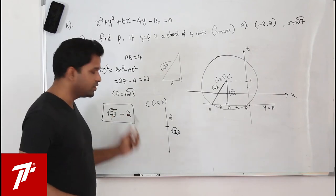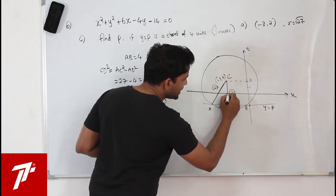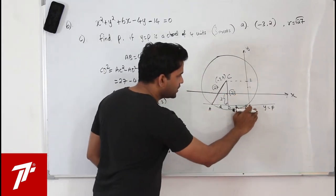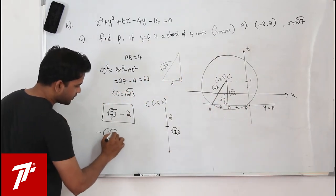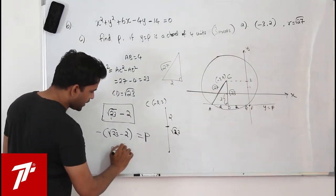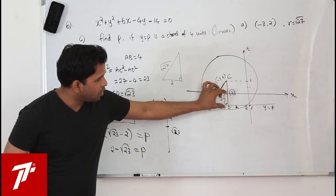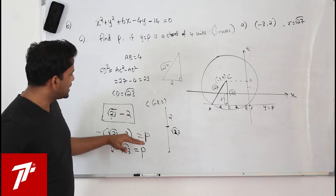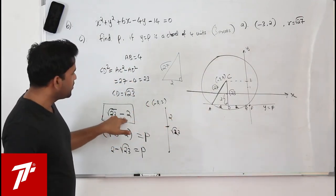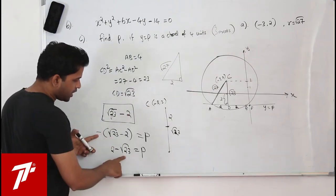Since p is a negative constant, we take the length sqrt(23) minus 2 and apply a negative sign. So p = 2 minus sqrt(23). Length is normally a positive value, but since p is given as negative, multiply by negative to get p = 2 minus sqrt(23). This question has three marks.